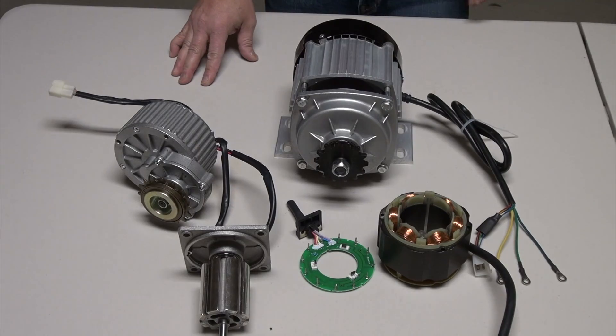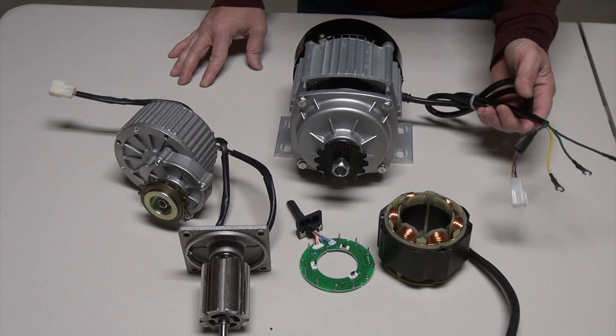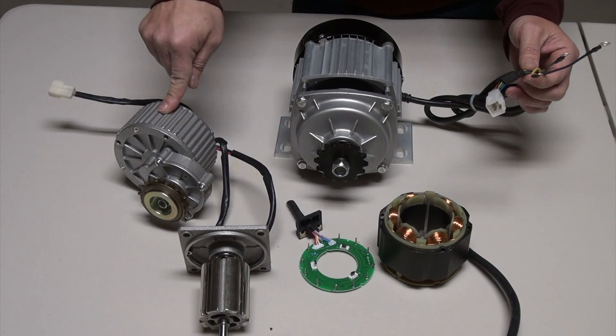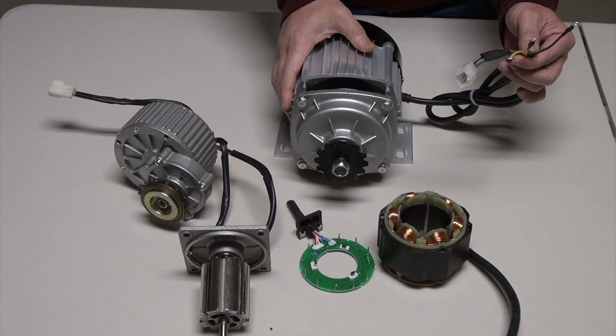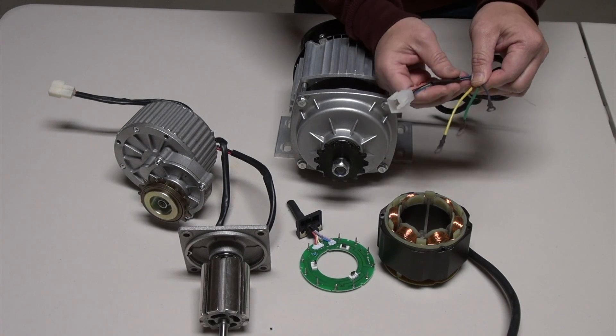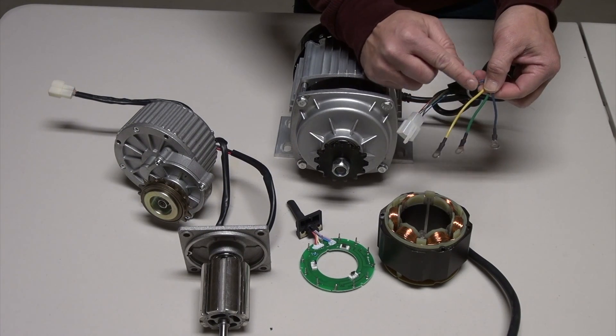The main difference between a direct current motor and a BLDC motor is that the BLDC motor has more wires coming out from it. Typically you'll see these three wires, these are called phase wires.